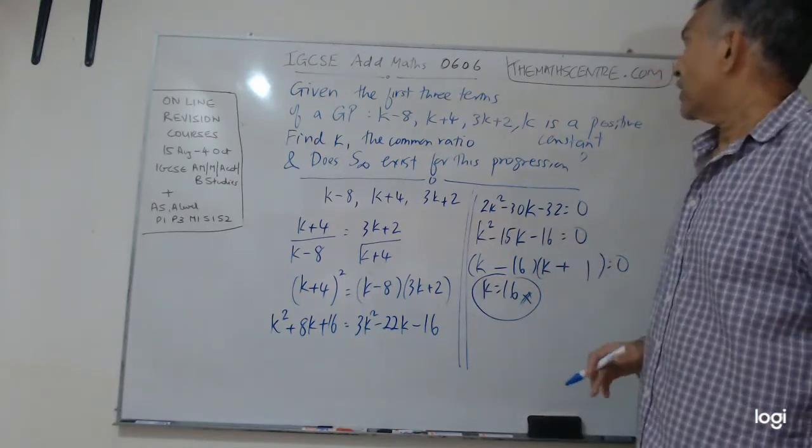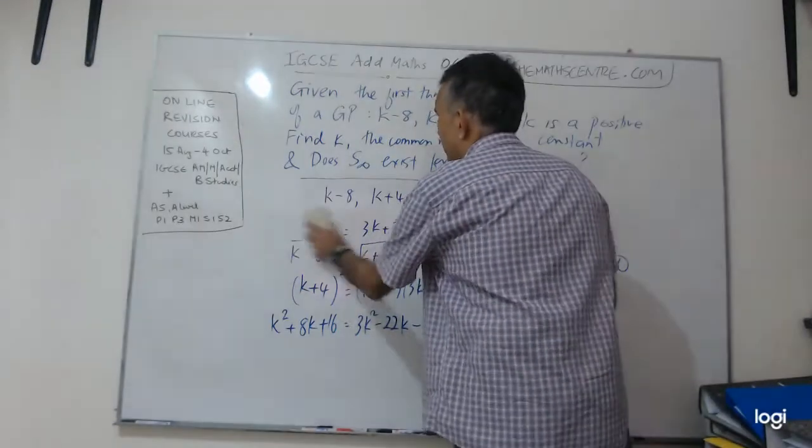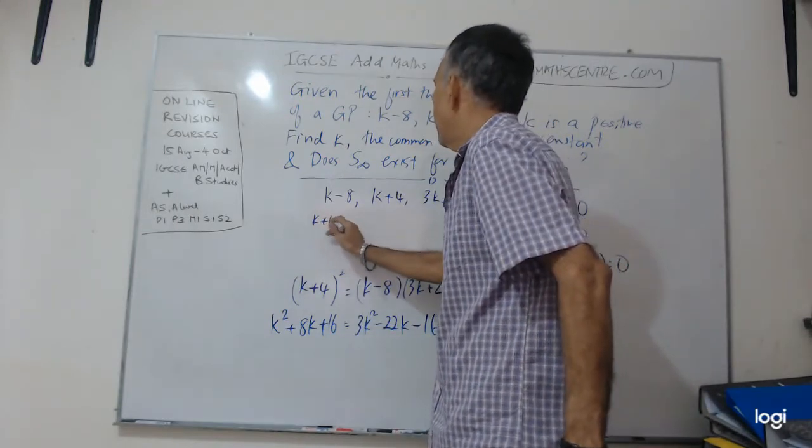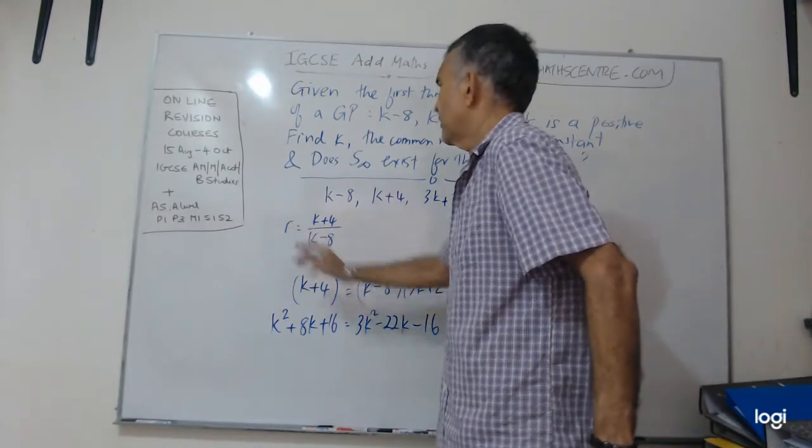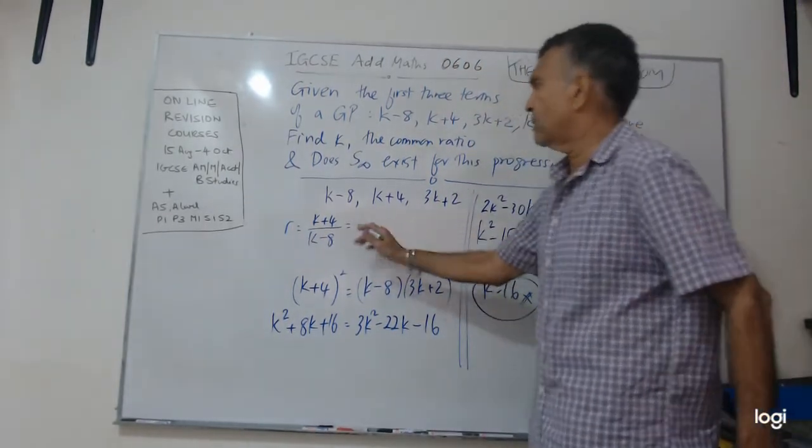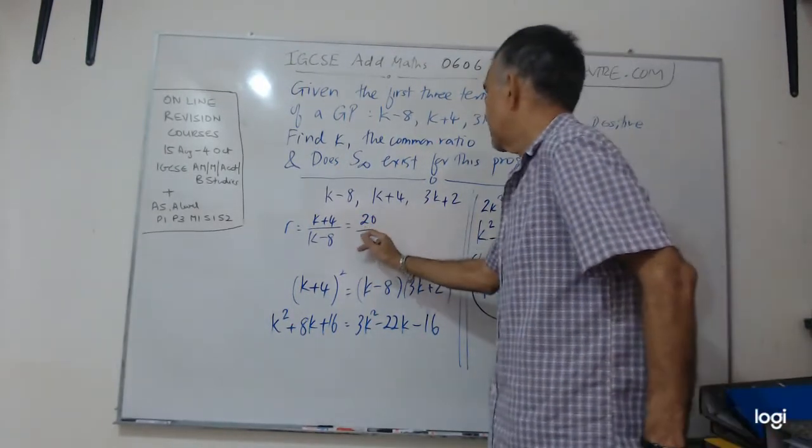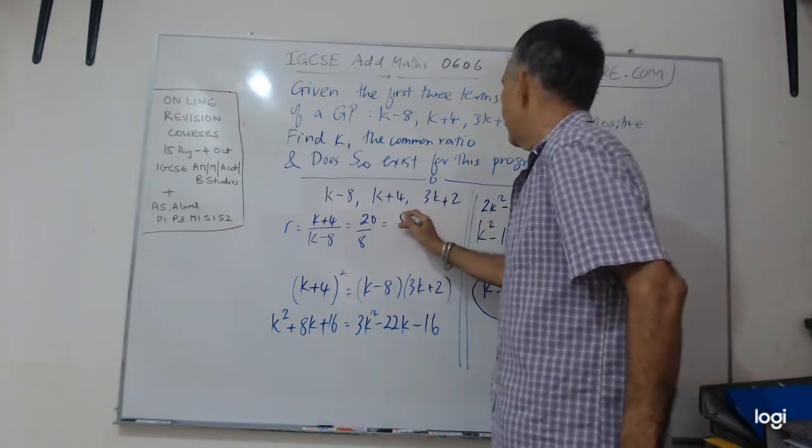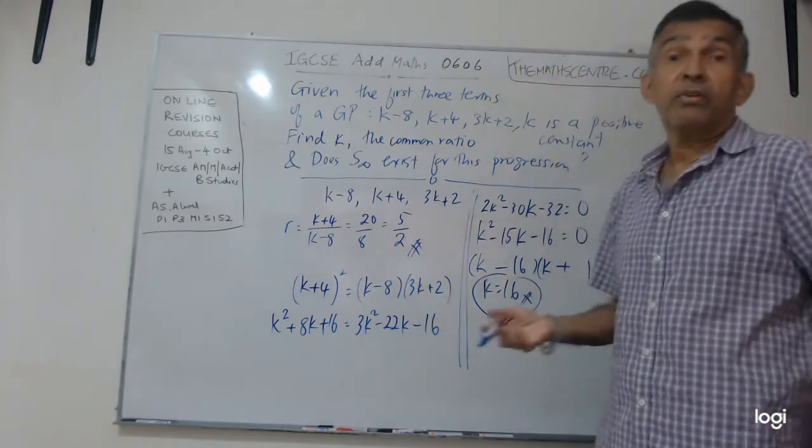Pretty easy to do. The common ratio, well, the common ratio is not so bad because you already know the idea. It's just what? It's K plus 4 over K minus 8. That's the common ratio R. So what is K? 16. What is 16 plus 4? 20. What is 16 minus 8? 8. And I have 20 divided by 8 divided by 4. I have 5 and 2. And we are done. My common ratio is 5 over 2.